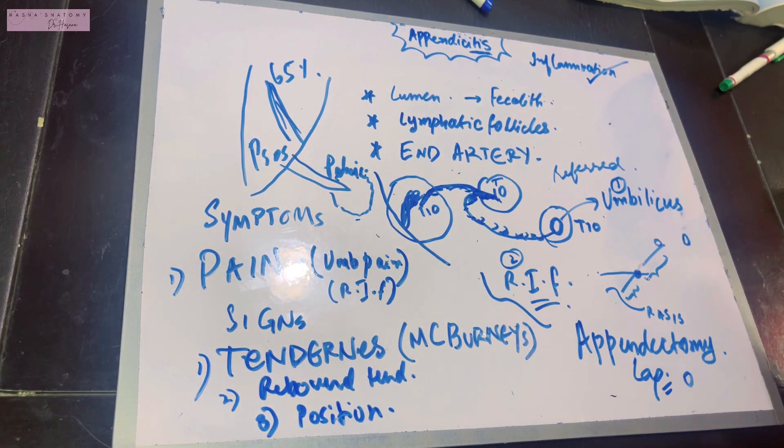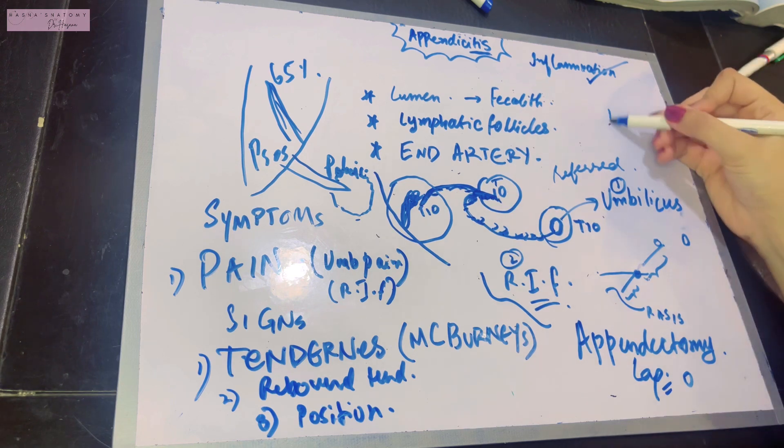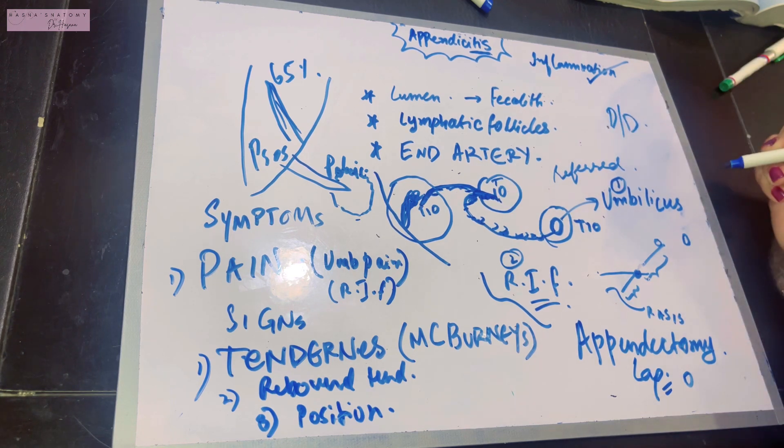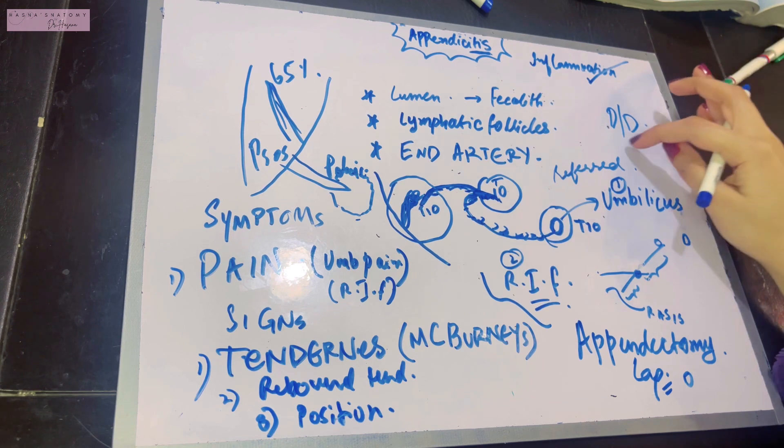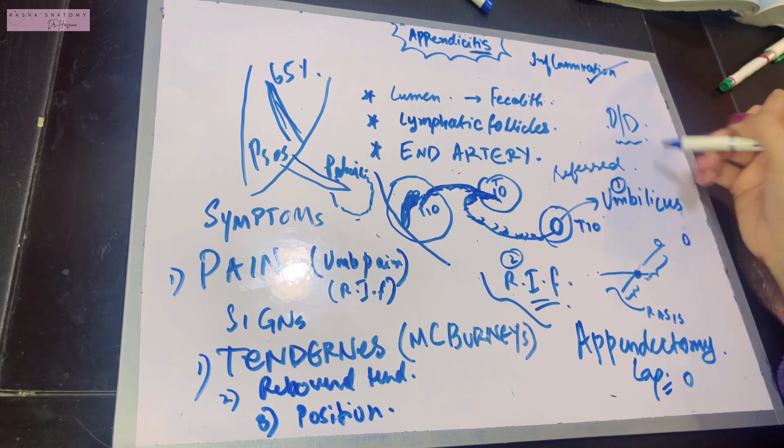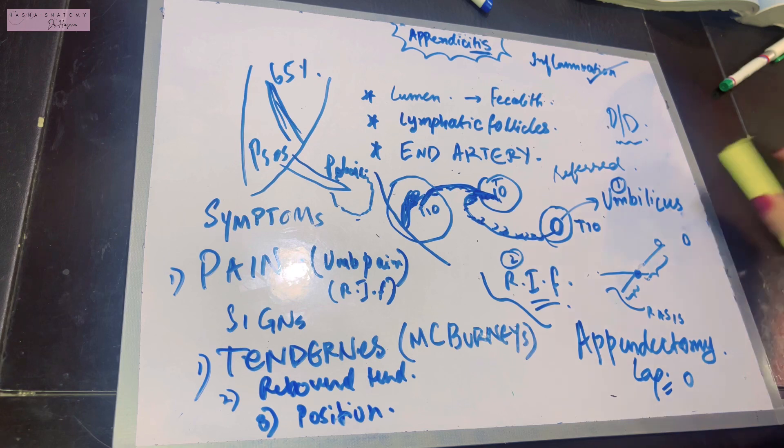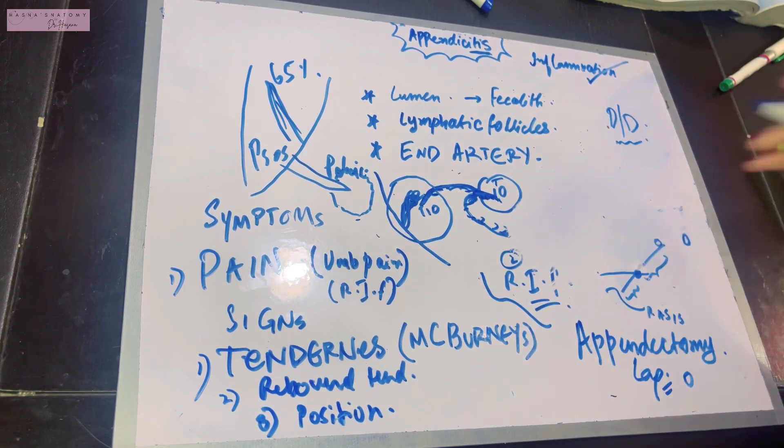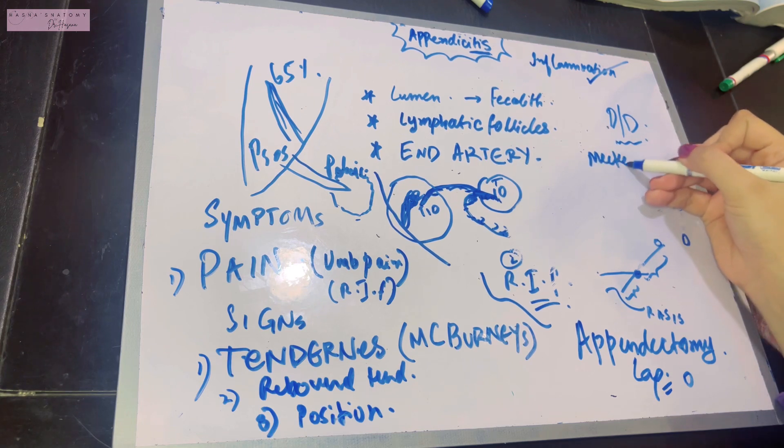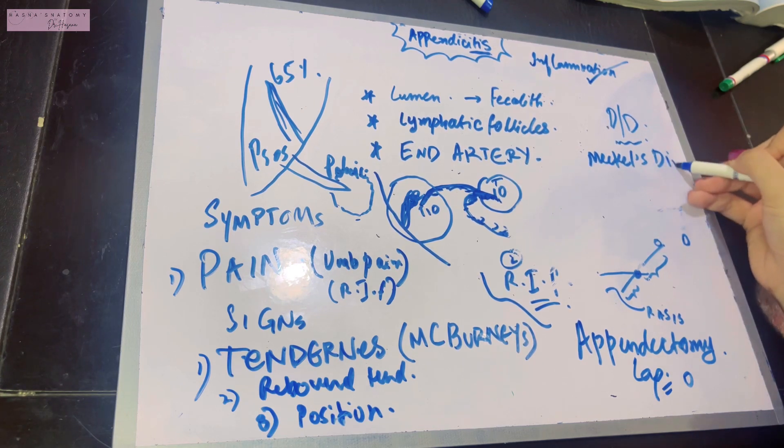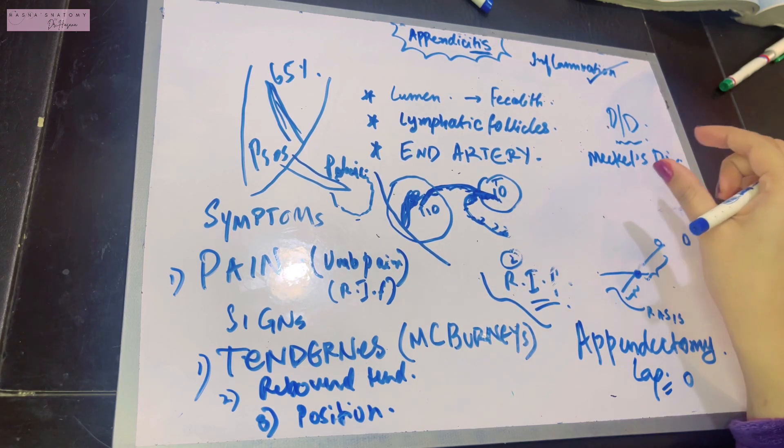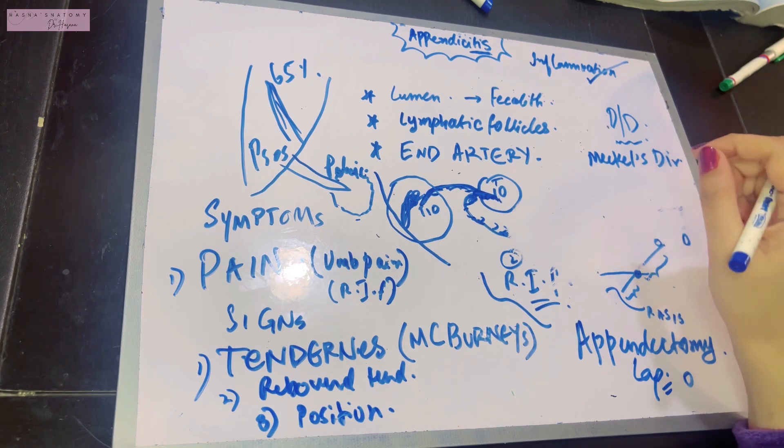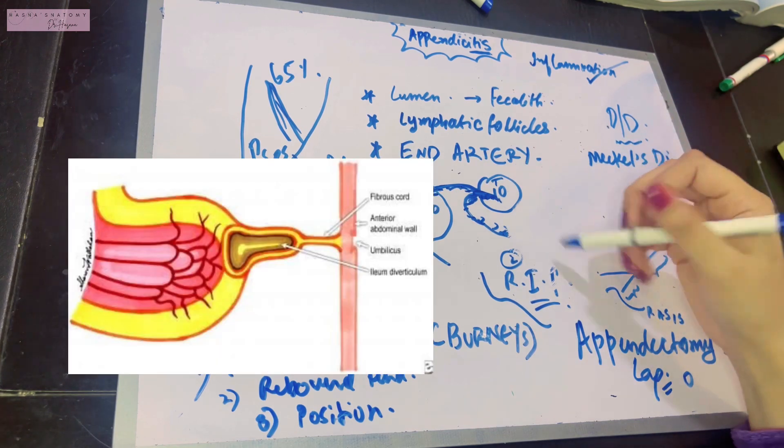That was all about appendicitis, but before I end this video, I want to talk about a very important differential diagnosis that comes with appendicitis. If a person is experiencing pain of appendicitis, there's one more thing we can think about. This important clinical condition is known as Meckel's diverticulitis. Basically, Meckel's diverticulum is a persistent piece of the proximal part of the vitelline intestinal duct.